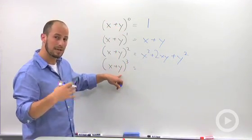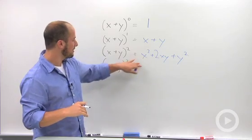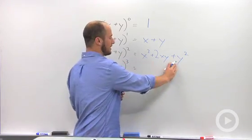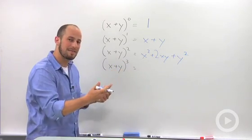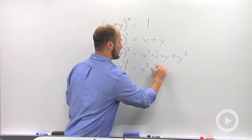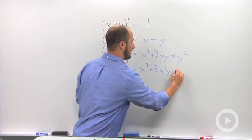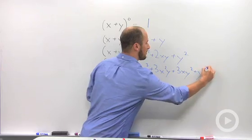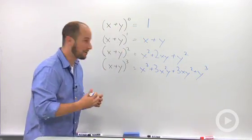x plus y to the third. We have to do a little bit more than just remembering this one. We'd actually have to multiply it out. It's just going to be this times another x plus y. We're going to save us the work and we'll just look at what the answer is, which is x cubed plus 3x squared y plus 3xy squared plus y cubed. If you don't believe me, you can try it out on your own.